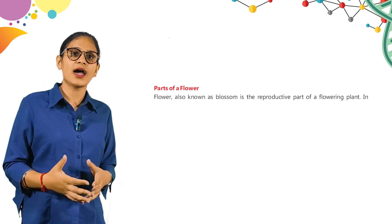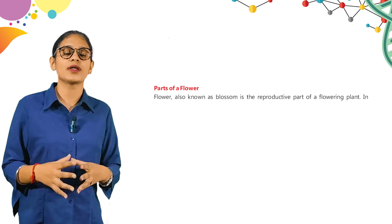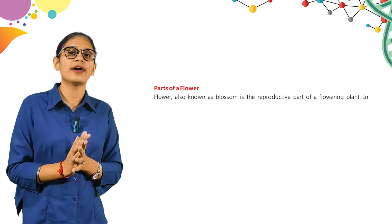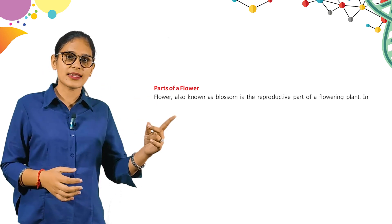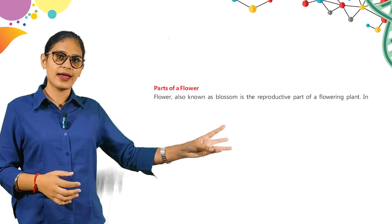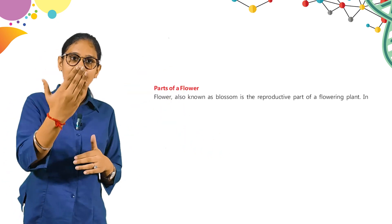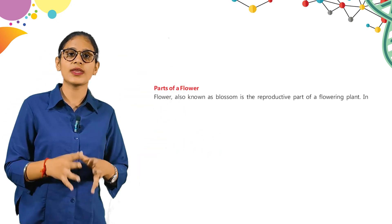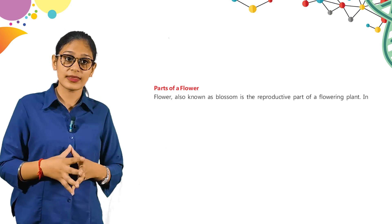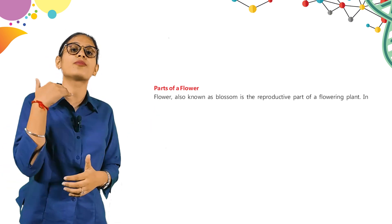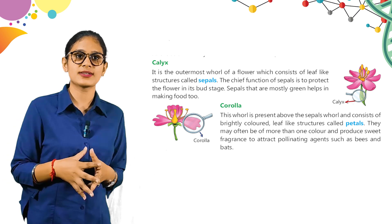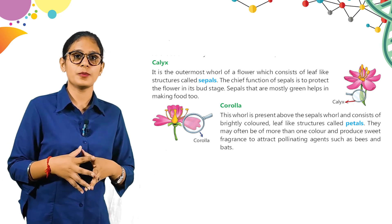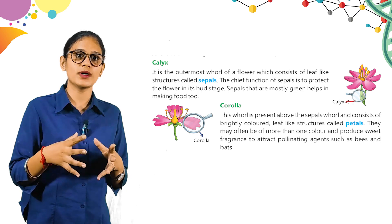Calyx and Corolla are called the accessory whorls of the flower, whereas Androecium and Gynoecium are called the reproductive whorls. The Calyx is the outermost whorl of a flower, which consists of leaf-like structures called sepals. The chief function of sepals is to protect the flower in its bud stage. Sepals that are mostly green also help in making food.